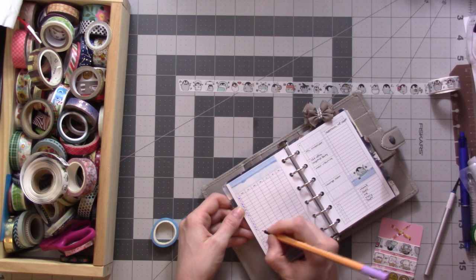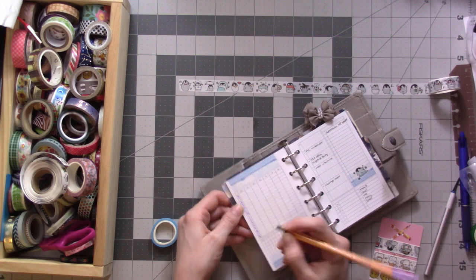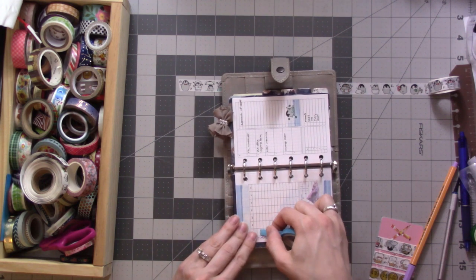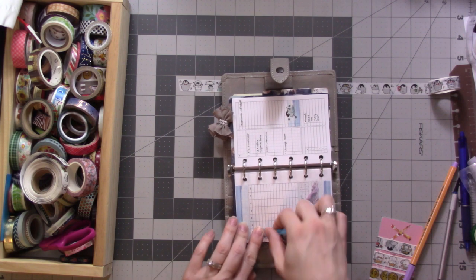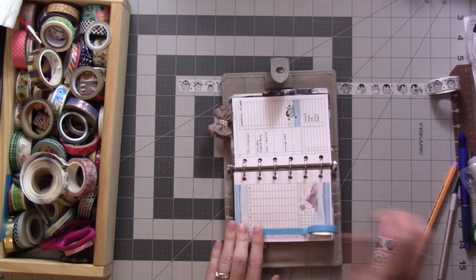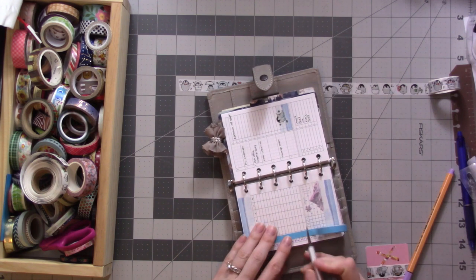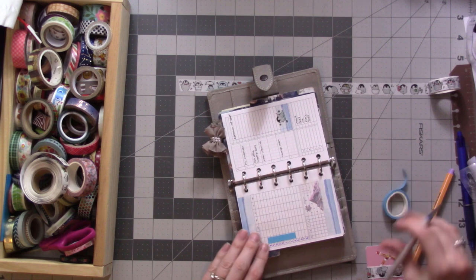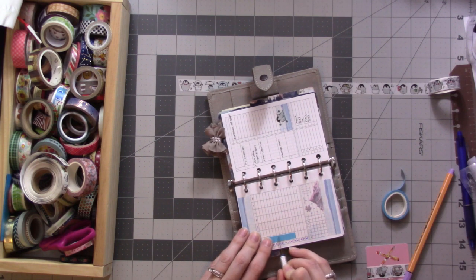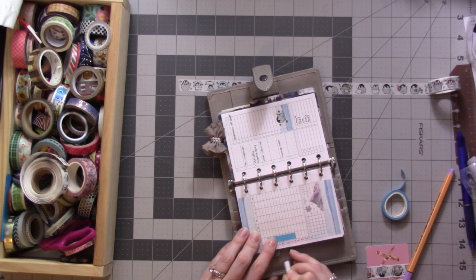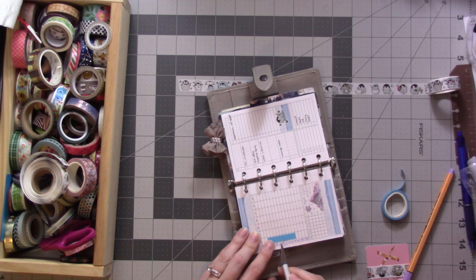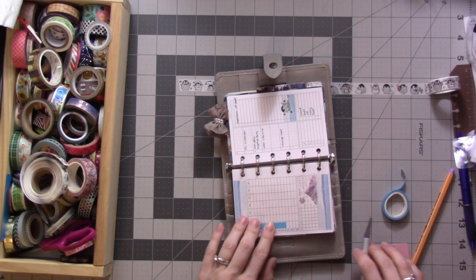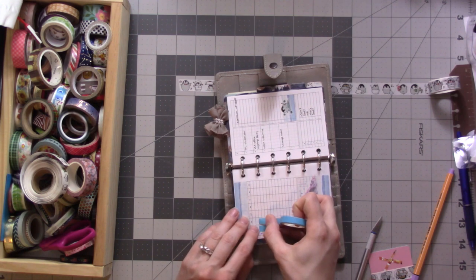These are Stabilo fine liners, point 88—I don't know what that means. Okay, there we go. So I work Monday from 9 to 5. Should I mark my lunch break? I guess I will. I take my lunch break from 11:30 to 12:30. What do I talk about so that I don't have to fast forward? Less editing is my goal right now.